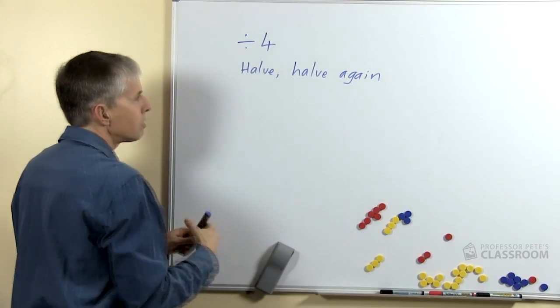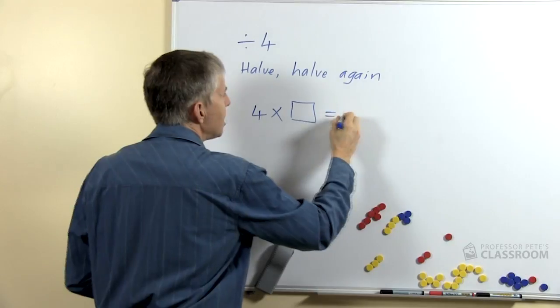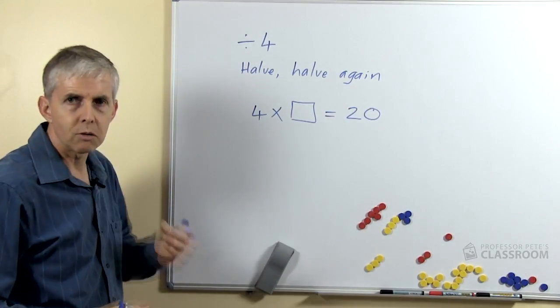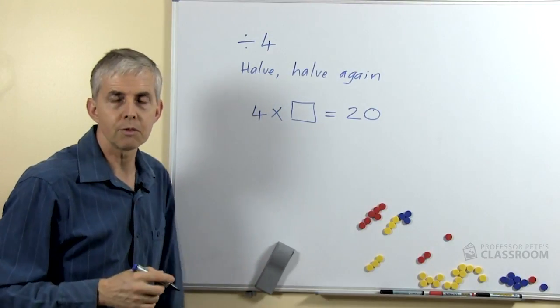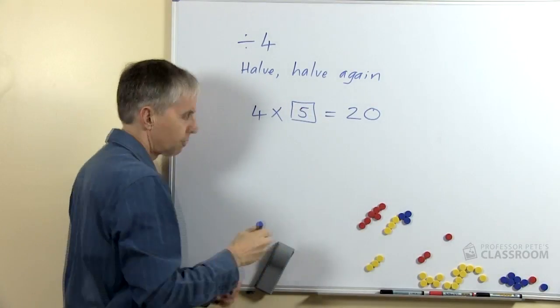An alternative strategy which works well is to say 4 times what equals the number we're dividing. So we might say 4 times what equals 20? Think of your 4 times number facts. What's the number that belongs in there? Of course it's 5.